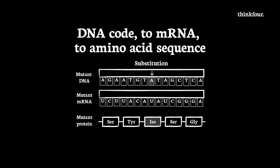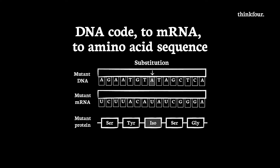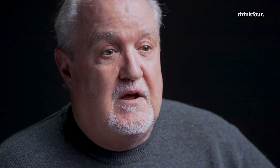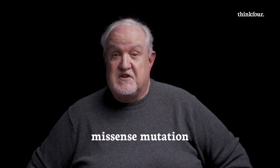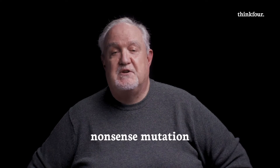If a substitution changes one nucleotide, then one base has changed, one codon on the messenger RNA is changed, and thus one amino acid in the sequence is changed. This form of substitution is called a missense mutation. There's another substitution mutation that can cause a stop codon to appear early in a sequence, and this is called a nonsense mutation. It may lead to an incomplete amino acid sequence, and the resulting protein will be non-functional.